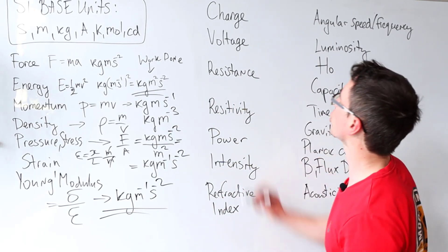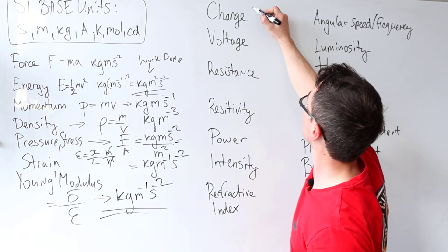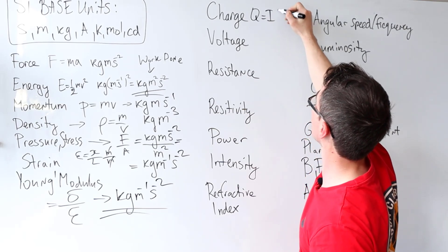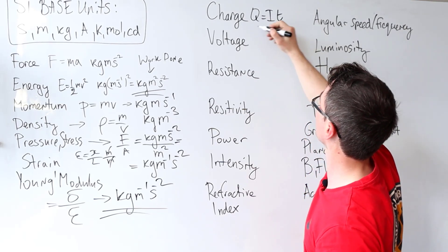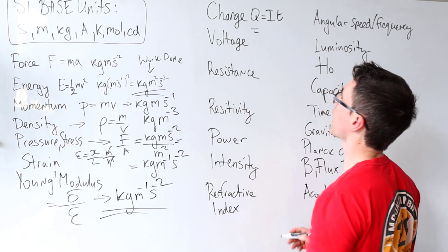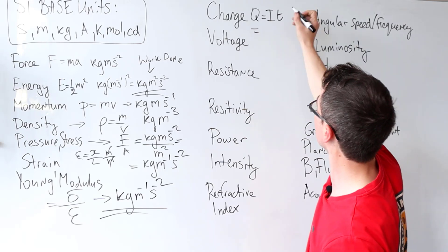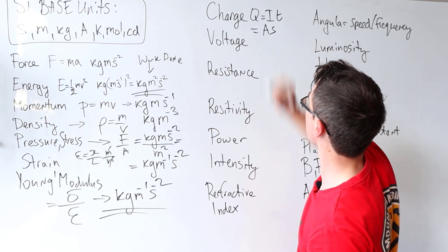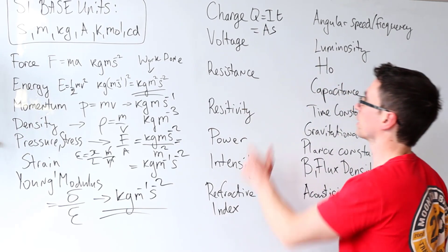Moving on to charge. Q is equal to I times t. The amp is a base unit, so the base unit for charge will be amp seconds.